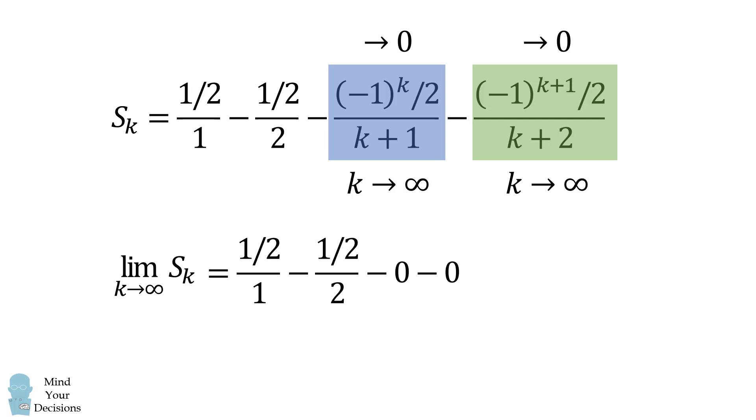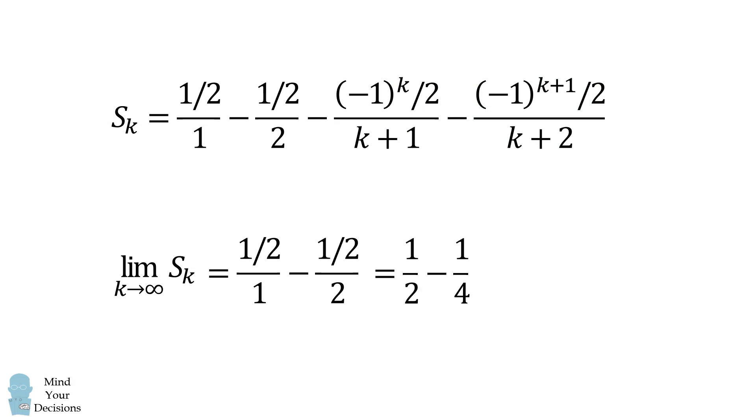Therefore, the final two terms will vanish, and we just have 1 half over 1 minus 1 half over 2, which is equal to 1 half minus 1 over 4, and that's equal to 1 over 4. And that's the answer.